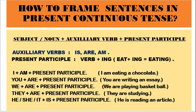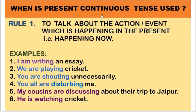Now let us try to understand the rules. When do we use present continuous tense? Rule 1: it is used to talk about an action or event which is happening in the present — that is happening right now. Examples: 'I am writing an essay', 'We are playing cricket', 'You are shouting unnecessarily', 'You all are disturbing me', 'My cousins are discussing about their trip to Jaipur', 'He is watching cricket', 'She is playing basketball'.